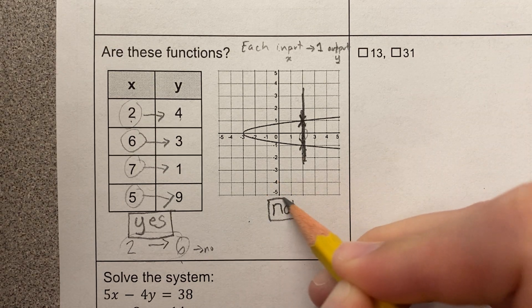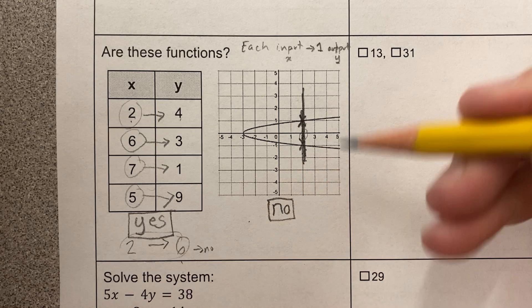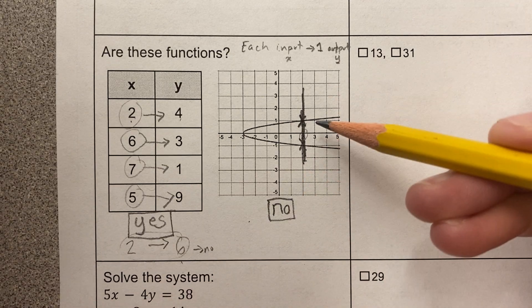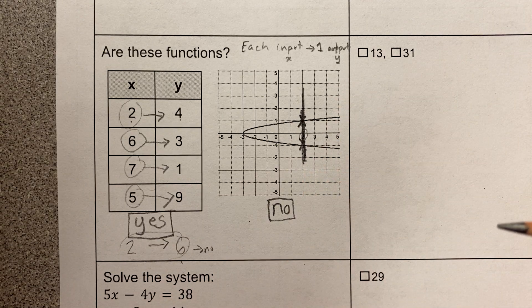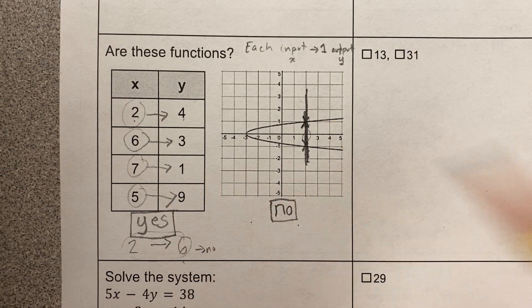In order for it to be a function, it has to pass a vertical line test, which means each vertical line only touches in one spot. So this is a yes, and this is a no.